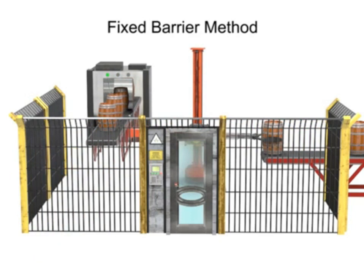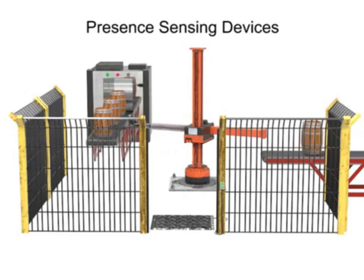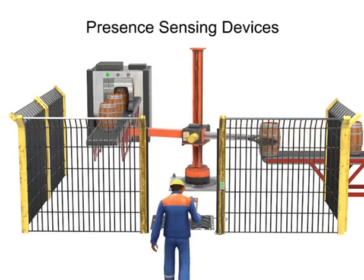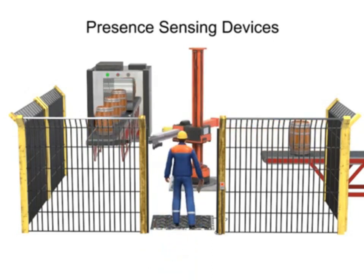Another method of protecting the robot's work envelope employs the use of presence-sensing devices. These devices detect the entry of a person into a hazardous area and slow or stop the robot. Pressure mats are typically installed just outside the robot's work envelope. When a person steps on the mat, a signal is sent to the robot to stop or slow work.